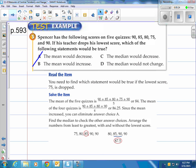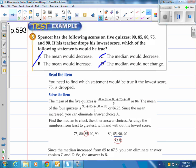It says find the median. So find the median to check the other answer choices, because they're talking about median in the other ones. Arrange the numbers from least to greatest with and without the lowest score. The first one has the 75 and the second one doesn't. We got 85 and we got 87.5. Well, since the median increases from 85 to 87.5, you can eliminate answers C and D, as it is changing, it's actually increasing. B is the only possible answer. The mean would increase. You can see it actually did that.